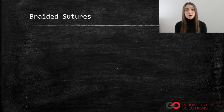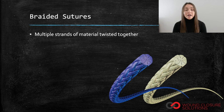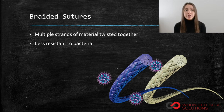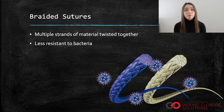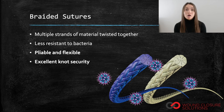Braided sutures are multi-filament, meaning that they consist of several strands of material twisted or braided together. The braiding creates tiny crevices, which can sometimes result in the harboring of bacteria — this is why monofilament sutures are often preferred from a risk reduction standpoint. That being said, braided suture is extremely pliable and flexible, and the composition allows for incredibly secure knot tying.